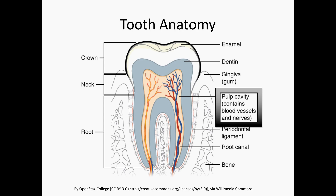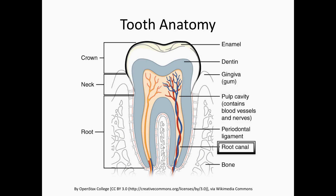The neurovascular bundle continues into the root, which is surrounded by cementum and is attached to the alveolar bone by the periodontal ligament, which plays a vital role in the viability of the tooth, and especially in dental avulsions, which we will talk about in detail in a later video.